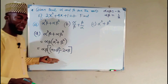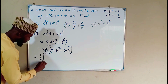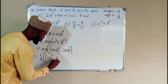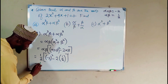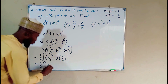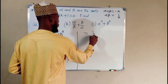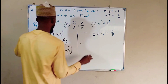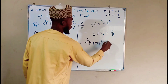We can now substitute our information in here. This is equal to: the product is 1 over 2, times, inside we have the sum which is negative 2 squared, minus 2 times the product which is 1 over 2. Simplifying: 1 over 2 times negative 2 squared is 4, minus 2 times one half is 1. So this is equal to 1 over 2 times 4 minus 1, which is 3, equaling 3 over 2. Therefore, alpha cubed beta plus alpha beta cubed is equal to 3 over 2.